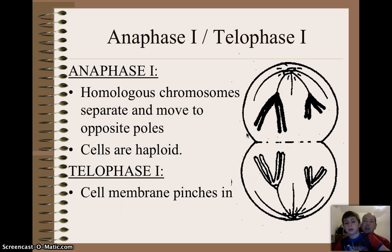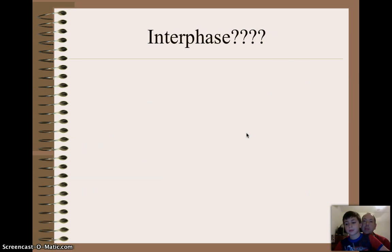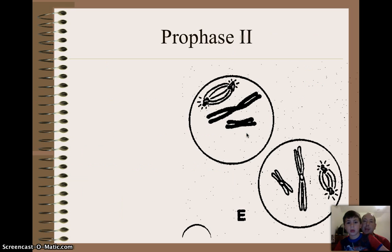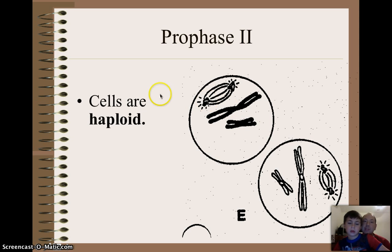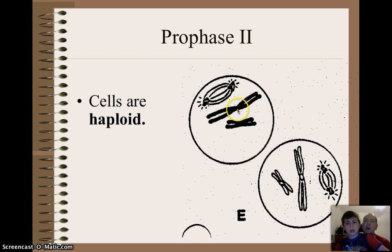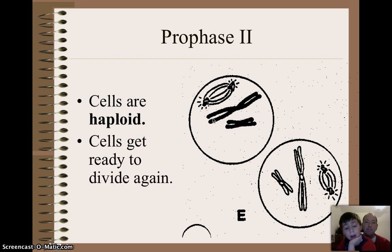So right after telophase I, we immediately jump right back into prophase II, where the chromosomes line up again. But remember that these cells are haploid at this point — which means they only have half the number of chromosomes. Even though it looks like they have the normal number, it's only half, because these two chromosomes are basically the same.